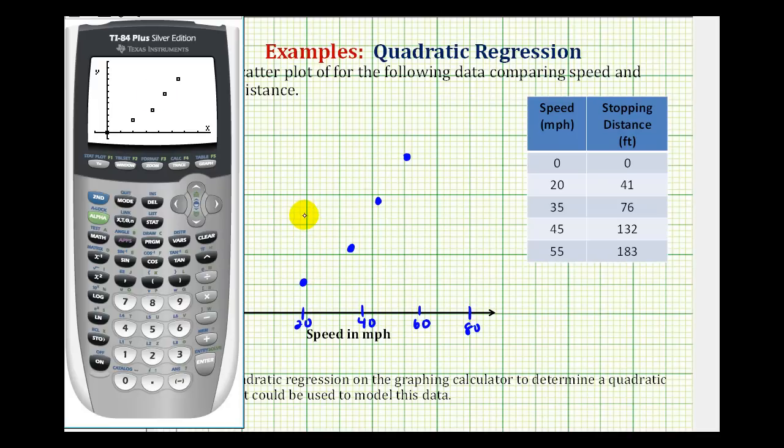And now we're going to perform quadratic regression and graph it right on top of this scatter plot. So we'll go back to the home screen. We're going to press stat, right arrow to calc. Option five is quadratic regression. And before we press enter, we want to store this equation in y1. So we're going to press vars, right arrow once, enter.